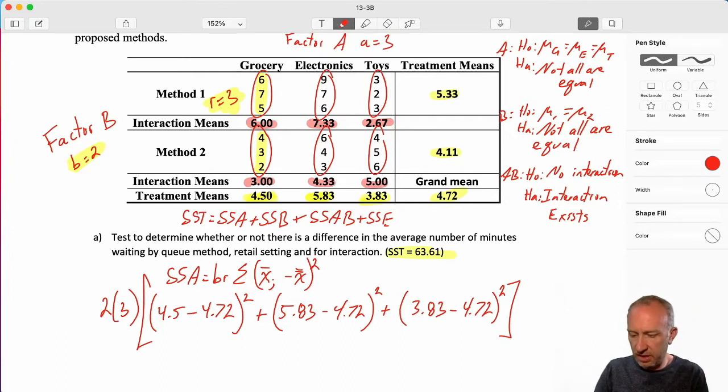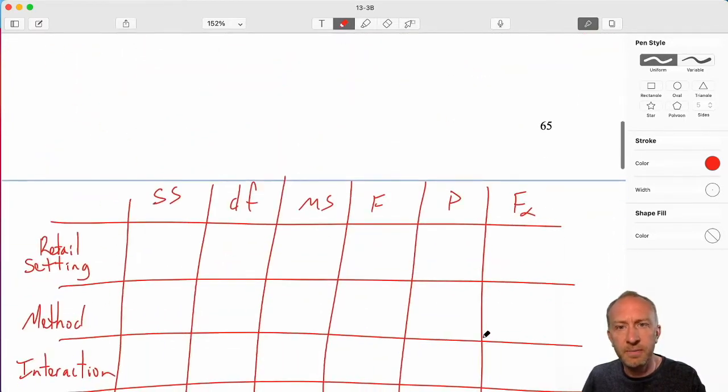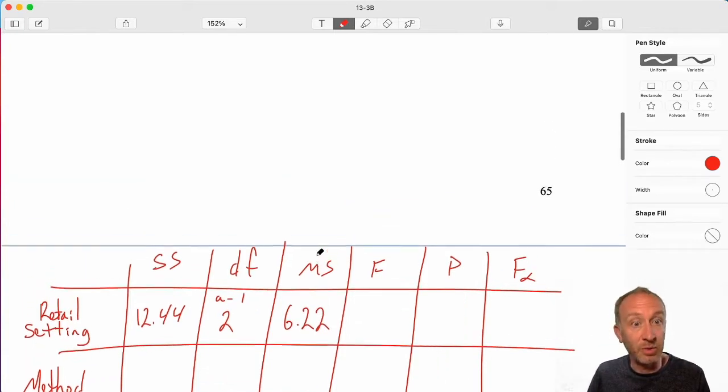And now we're looking at these treatment means, 4.5. Don't forget this grand mean, always the same for all of these calculations. Plus 5.83, plus 3.83. So, 4.5 minus 4.72 squared, plus 5.83 minus 4.72 squared, plus 3.83 minus 4.72 squared. Times that by 6, which is our 2 times 3. And I have 12.44. So, here's our 12.44 degrees of freedom. A minus 1. I have three treatments. 3 minus 1 is 2. Divide sums of squares by degrees of freedom. 6.22.